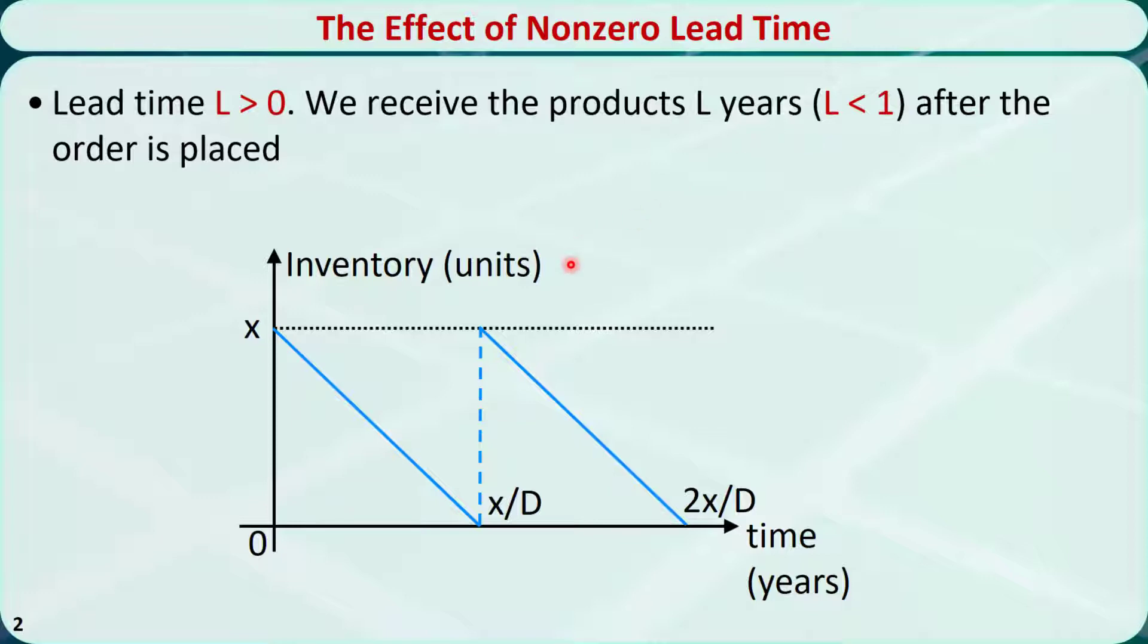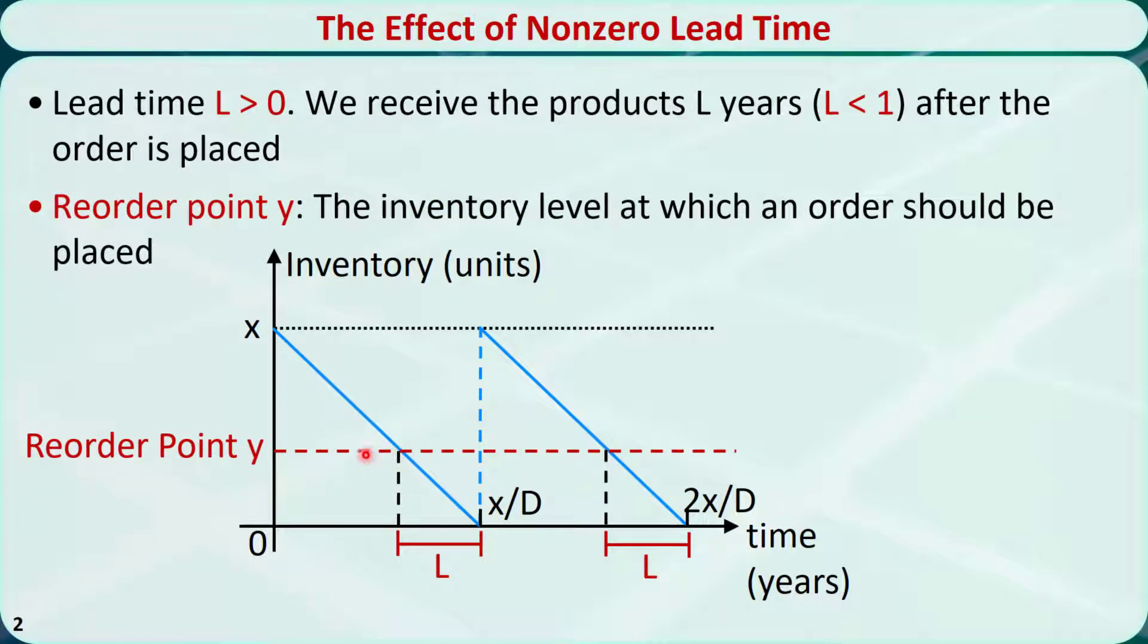The annual ordering cost and the annual holding cost do not change. Hence, the EOQ still minimizes the total cost. To prevent shortages and minimize the holding cost, each order must be placed L years ahead of time, so the inventory level is decreased to 0 when the products arrive. The inventory level y at which an order should be placed is the reorder point.